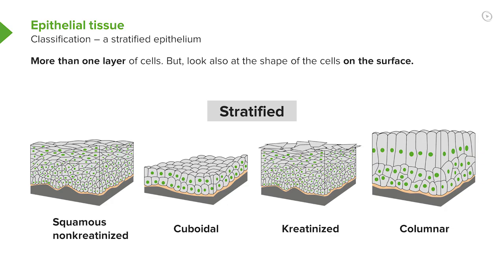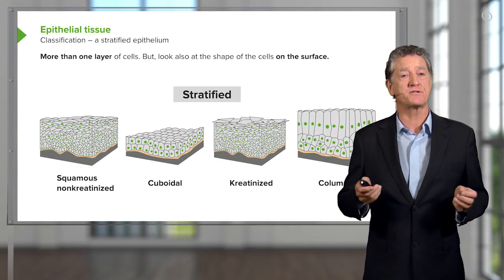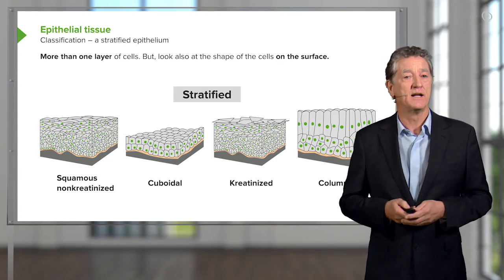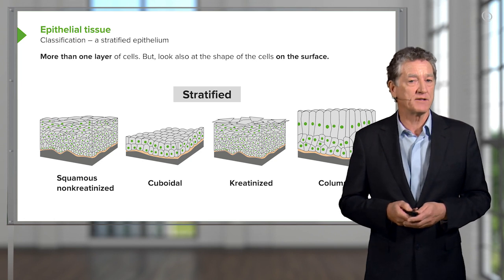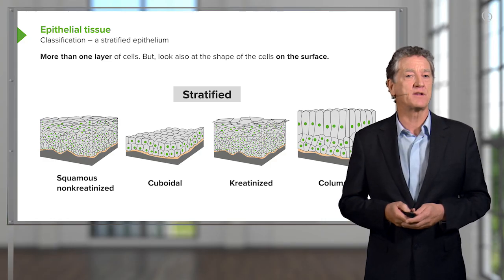Sometimes the epithelial layers may have many more cells, not just the one cell. In that case, we call the epithelium stratified. And again, we further extend that classification depending on the shape of the surface cells. They could be squamous at the surface, so we call it a stratified squamous non-keratinized epithelium.